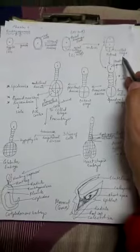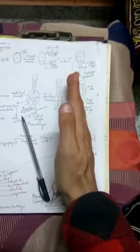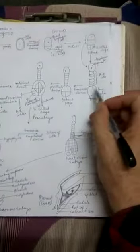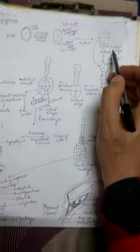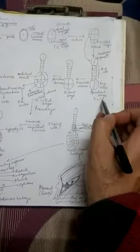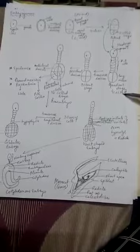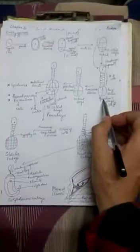The embryo at the two-cell stage is better called the pro-embryo. This pro-embryo undergoes another plane of division: the first division occurred in one plane, the second division in a perpendicular plane, so although you can only see two cells from one direction, by this stage the two-cell situation has changed into a four-cell situation. The two-celled pro-embryo has now become a four-celled pro-embryo.